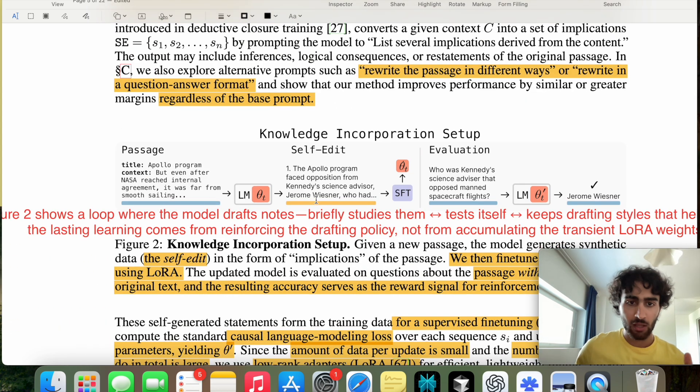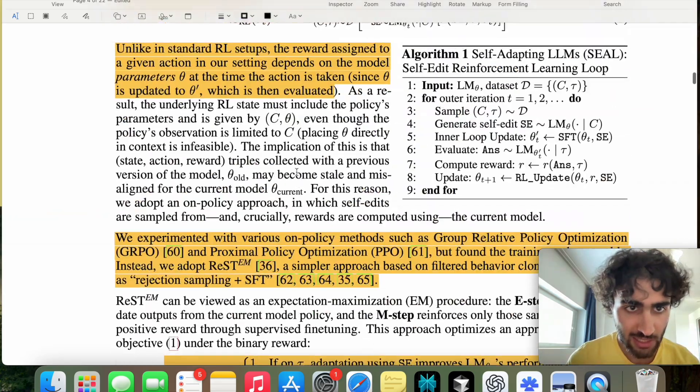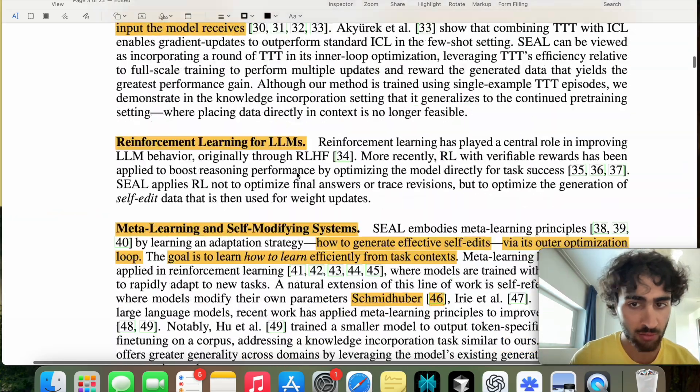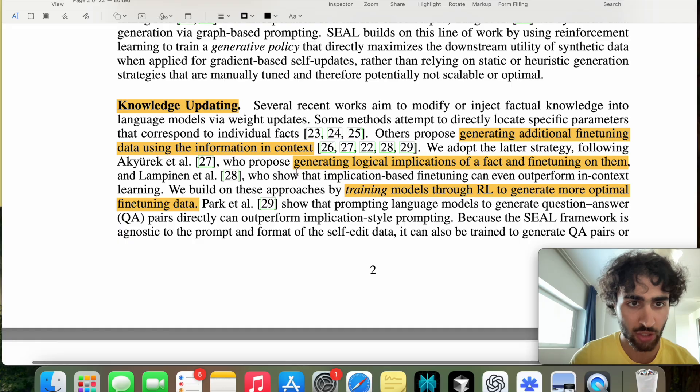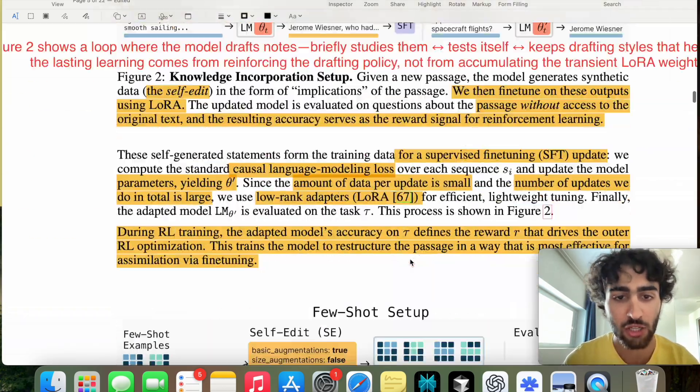And what's interesting is that our method improves performance by a similar or greater margin, regardless of the base prompt. So it's kind of prompt agnostic, I would say. And in this example, we have a statement about the Apollo program saying that Jeremy Weisner was against something. Okay. And then the large language model gives the implications. So when I mentioned implications, this is what I was referring to. Let's quickly just get up to here and knowledge updating. Generating logical implications of a fact and fine-tuning on them.